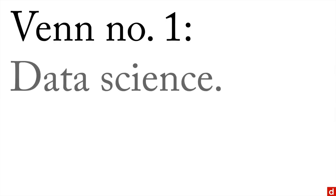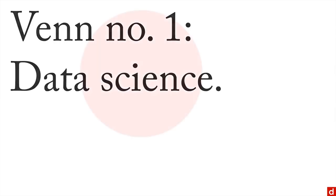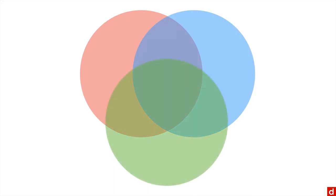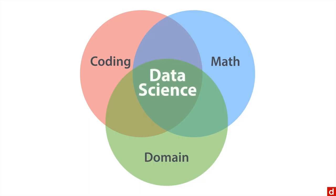Venn number one for data science is something we've seen already. We have three circles. And we have coding and we have math and we have some domain expertise that put together get data science.